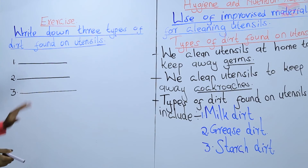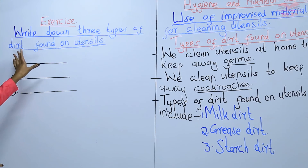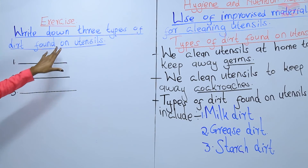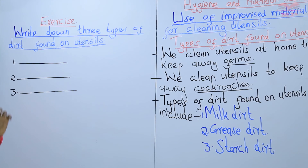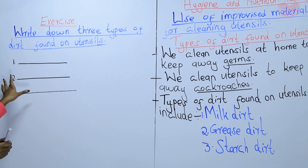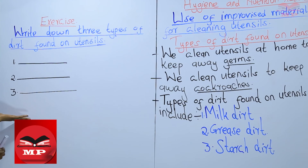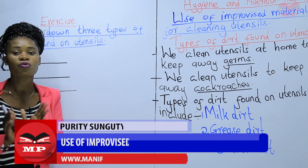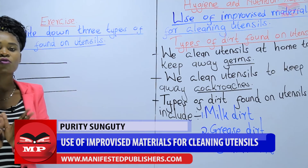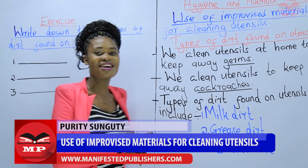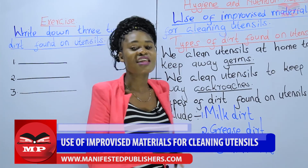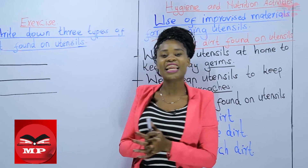The question: write down three types of dirt found on utensils. Fill your answers in blank space number one, two, and three. Make sure that you are going through your work after you have completed it. Hope to see you in the next lesson, and thank you for attending the lesson.